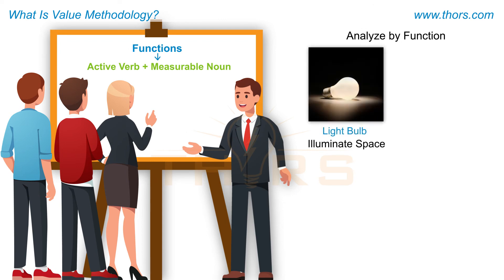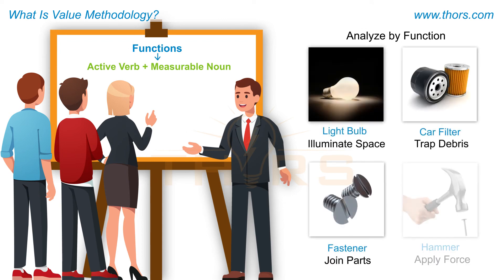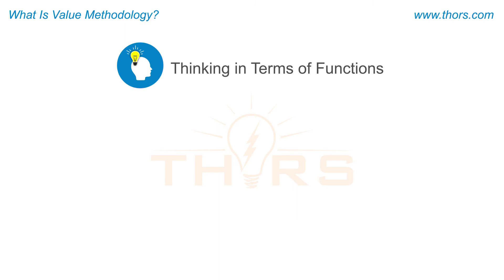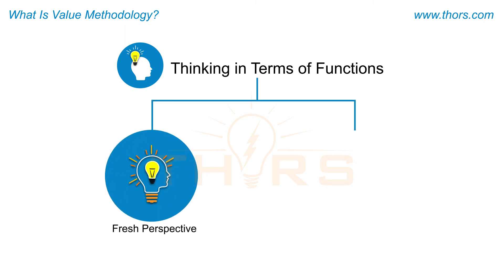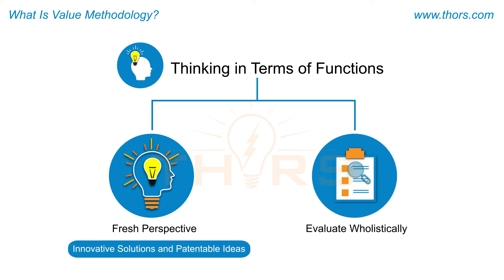Illuminate space, trap debris, join parts, and apply force are examples of functions. Analyzing projects in terms of their functions is the most unique feature of the Value Methodology process. The advantages of thinking in terms of functions include viewing the project with a fresh perspective and evaluating the project holistically. Fresh perspectives may spur innovative solutions and patentable ideas.